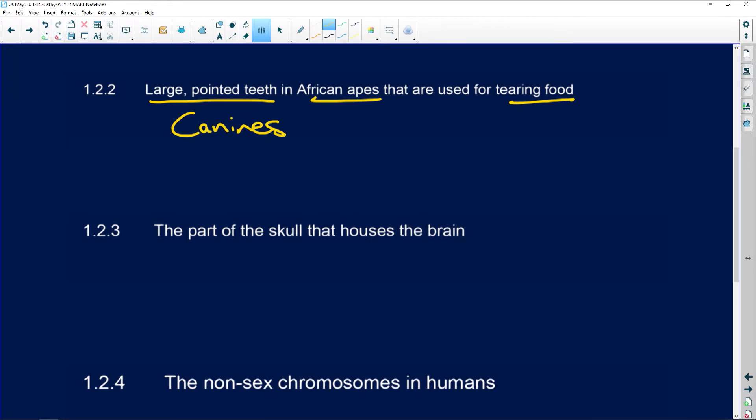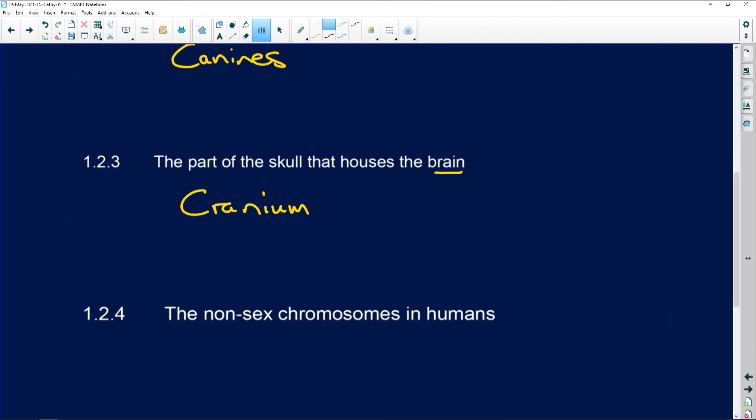The part of the skull that houses the brain is the cranium. So the cranium is this part. It's this big part over here. Remember, the whole thing is your skull. So that's your jaw and everything else. The cranium is this part.